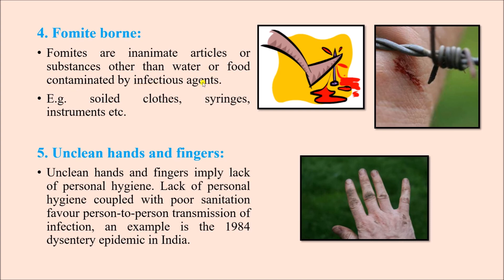Next is fomite-borne transmission. Fomites are inanimate particles or substances — other than water or food — contaminated by infectious agents. Food and water are considered vehicle-borne, not fomites. Any other inanimate articles used in daily life are known as fomites; examples are soiled clothes, syringes, and instruments. Unclean hands and fingers, reflecting lack of personal hygiene coupled with poor sanitation, favor person-to-person transmission — for example, the 1984 dysentery epidemic in India.